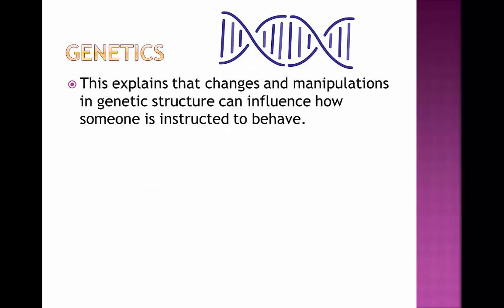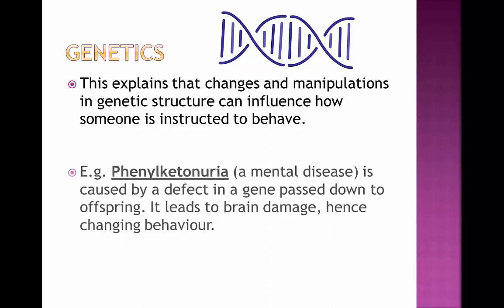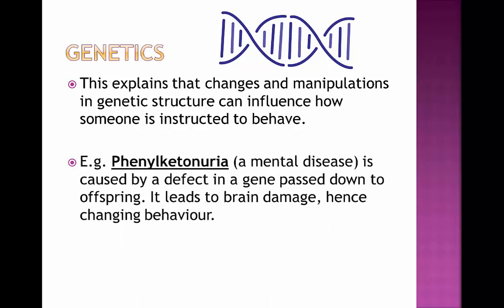The next factor is genetics. This explains that changes and manipulations in genetic structure can actually influence how someone is instructed to behave. For example, phenylketonuria is a mental disease which is caused by a defect in a gene passed down from its offspring. It leads to brain damage, which can then cause a change in behaviour and lead to more abnormal behaviour that can be maladaptive for the human body.